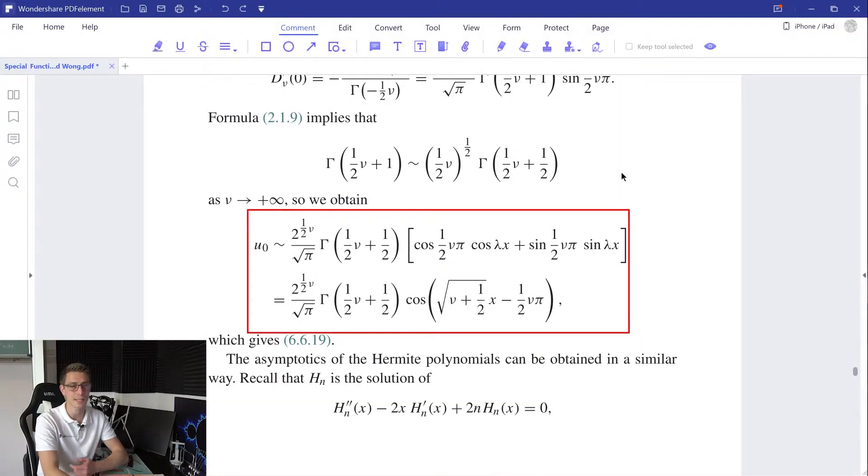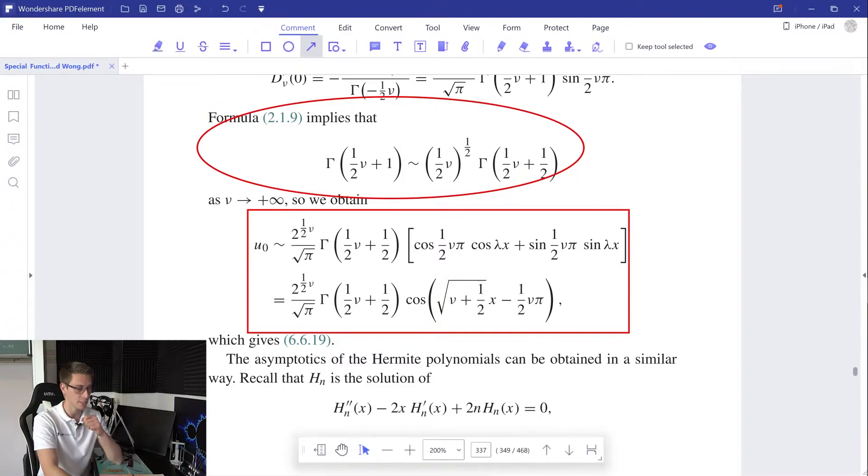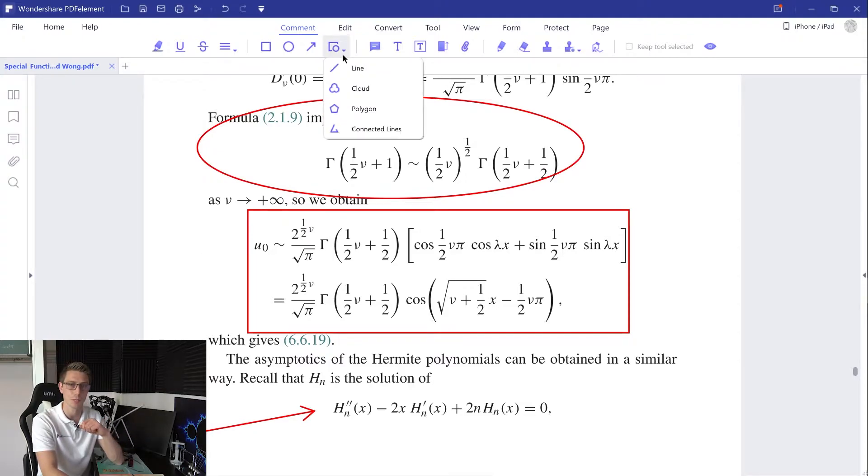Next to boxes, there are obviously other geometric figures like ellipses or circles. Or maybe you want to point something using an arrow. Maybe this right here is also a very important formula. Let's place an arrow and we're done. If you want to see all the available options for geometric annotations, you can just go up here to the drop down menu and select what you prefer the most.